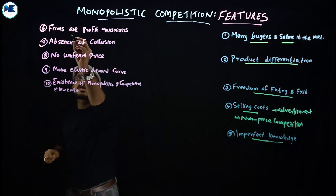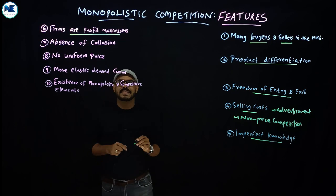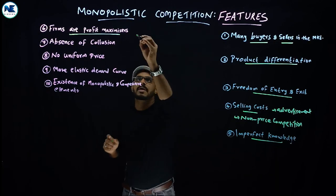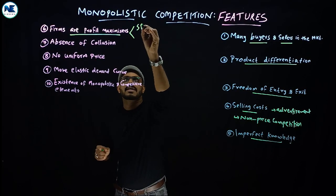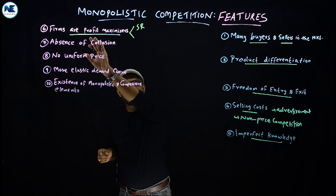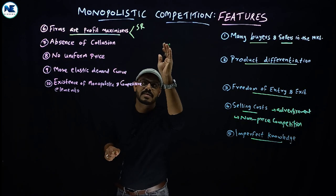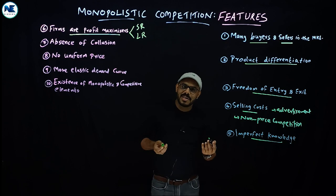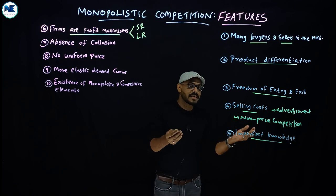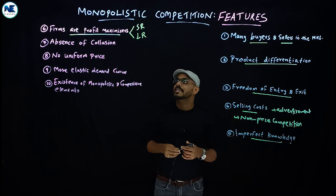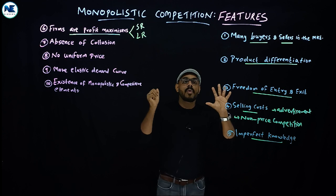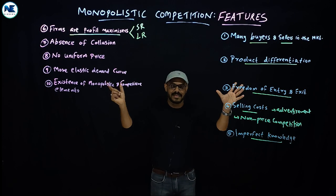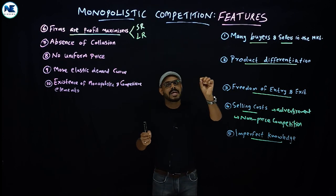The seventh point is that firms are profit maximizers. Both in the short run and in the long run, the aim is profit maximization. The equilibrium condition is where MC equals MR — we will discuss this in the upcoming video.